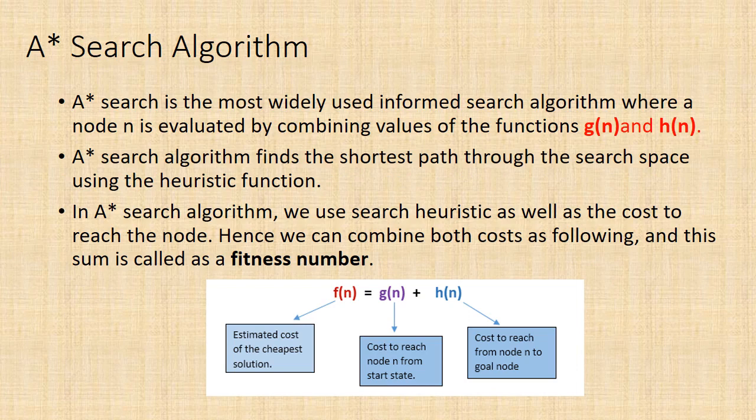A* search is the most commonly known form of best-first search. It has combined features of UCS and greedy best-first search, by which it solves the problem efficiently. A* search algorithm finds the shortest path through the search space using the heuristic function. This search algorithm expands less search tree and provides optimal result faster. In A* search, a node n is evaluated by combining values of the functions g(n) and h(n). The function g(n) is the path cost from the start or initial node to a node n, and h(n) is the estimated cost of the cheapest path from node n to the goal node. Therefore, we have f(n) = g(n) + h(n), where f(n) is the estimated cost of the cheapest solution through n.